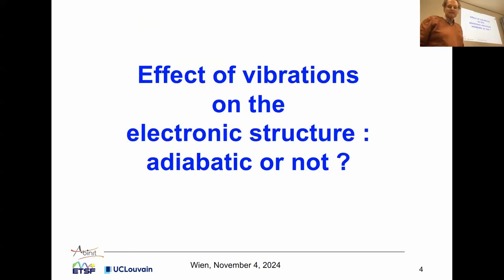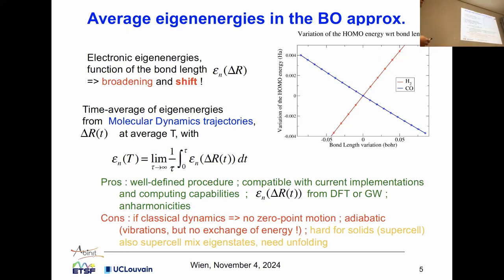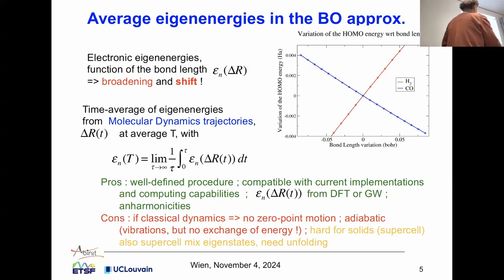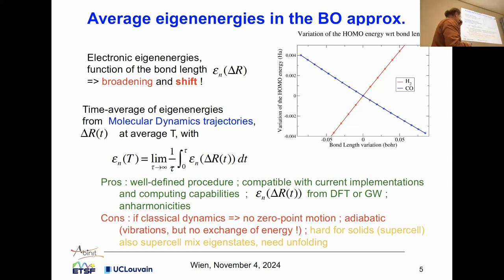What do I mean by adiabatic or not? In the Born-Oppenheimer approximation, it is straightforward to compute eigenenergies in whatever electronic approach. For example, for H₂ or CO molecules, as a function of the bond length variation, here is the highest occupied molecular orbital energy. The eigenenergy for CO is represented as a function of bond length, and for H₂ here. We see that changing the bond length from equilibrium will indeed change the eigenenergy. Roughly it is linear, but not quite — there is a small bending.